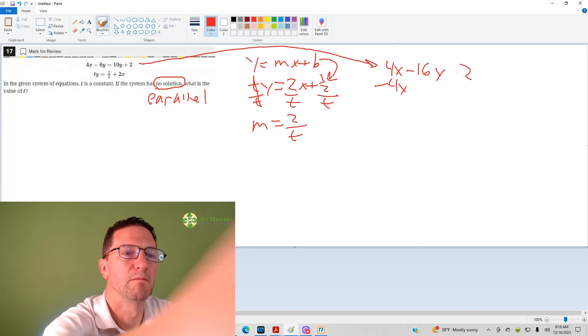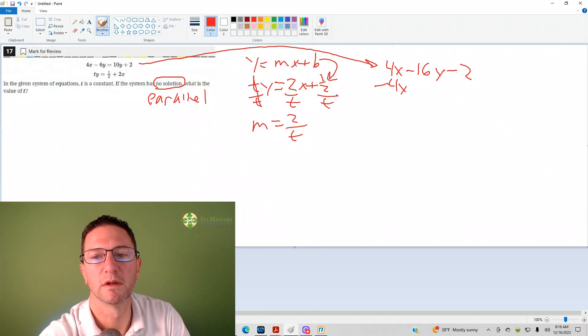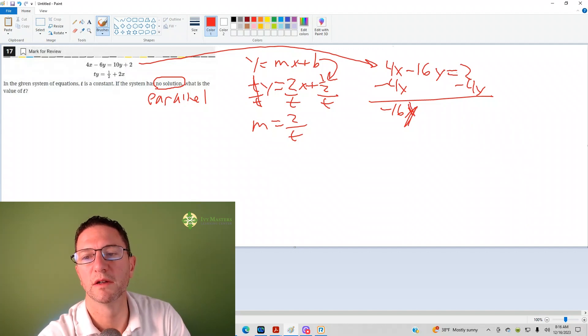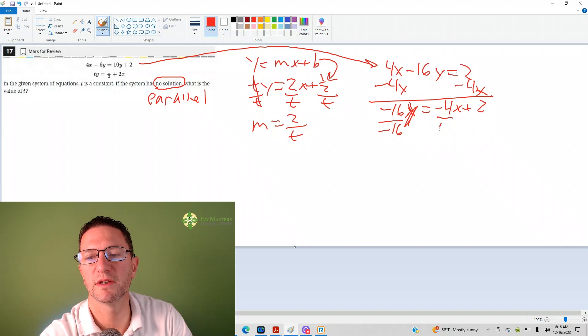Okay, now I'm going to subtract 4x from both sides. Actually, I'm going to erase it before you put this in the form, right? Okay, negative 4x. I already got that. So I'm going to subtract 4x from both sides. Okay, then I got negative 16y equals negative 4x plus 2.